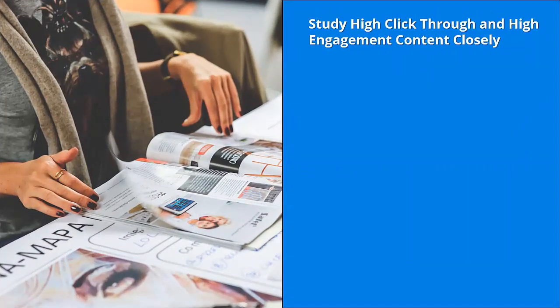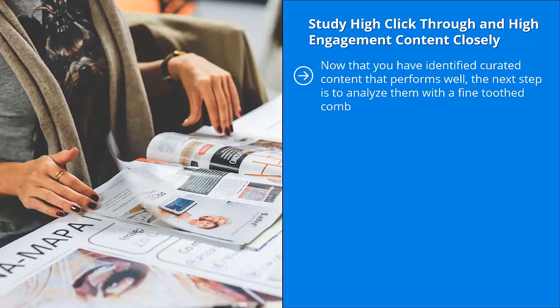Study high click-through and high engagement content closely. Once you have identified curated content that performs well, the next step is to analyze it with a fine-toothed comb. Ask yourself: what problems are people interested in when they read this content? How are these pieces positioned or presented? Do they use some sort of emotional headline? Do they use subheadings that ask questions? Do they drag the person along, or do they just lay out the information dead center?